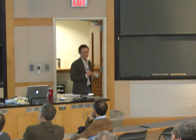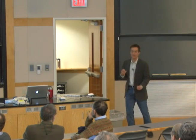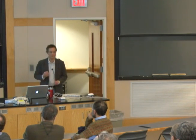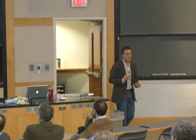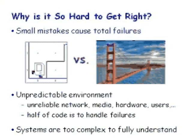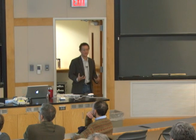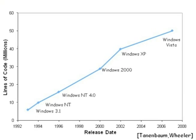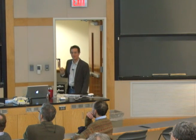Software is also used in a very unpredictable environment. There are all kinds of failures to deal with: networks going down, media not working, hardware failures, users doing unexpected things. If you look at a large code base, over half the source code is just to handle unusual situations like these. It's very hard to predict all of them and hard to test that you've handled them correctly. These systems are also too complex for any one individual to understand. Windows NT and 3.1 had 10 million lines of code. Windows Vista is over 50 million lines of code — a million printed pages of source code — way too much for any single person to fully understand.